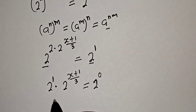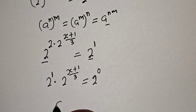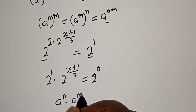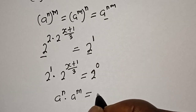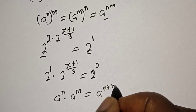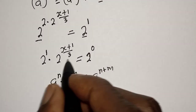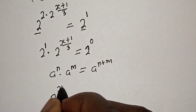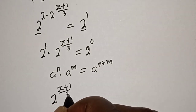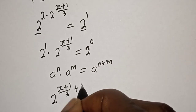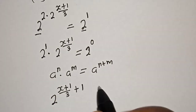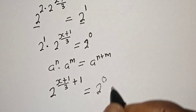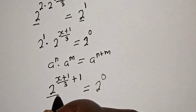Take note of this rule: if you have a raised to the power n multiplied by a raised to the power m, this equals a raised to the power n plus m. Applying this, we get the exponent x plus 1 over 3 plus 1 equal to 0, because the right-hand side is 2 raised to the power of 0.